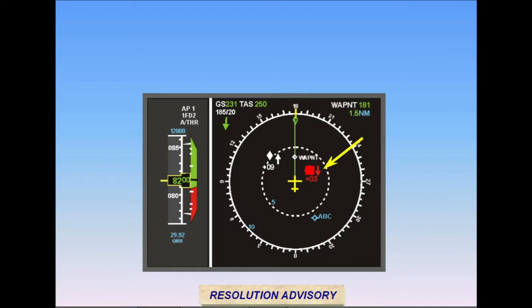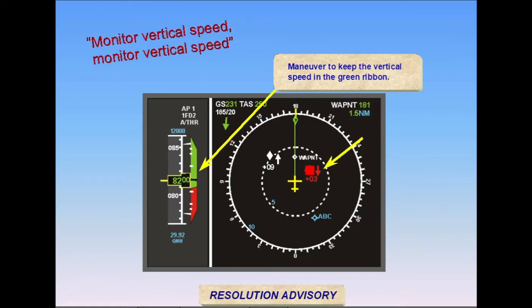Vertical guidance commands are presented on the vertical speed tape in the primary flight display. The pilot must maneuver to avoid the prohibited red portion of the tape and remain in the green area of the vertical speed tape. In this example, your aircraft has safe separation at the present vertical speed and altitude. The preventive advisory calls for monitoring vertical speed to avoid the red prohibited area of the tape. Note the proximate traffic symbol at 11 o'clock within 6 miles.